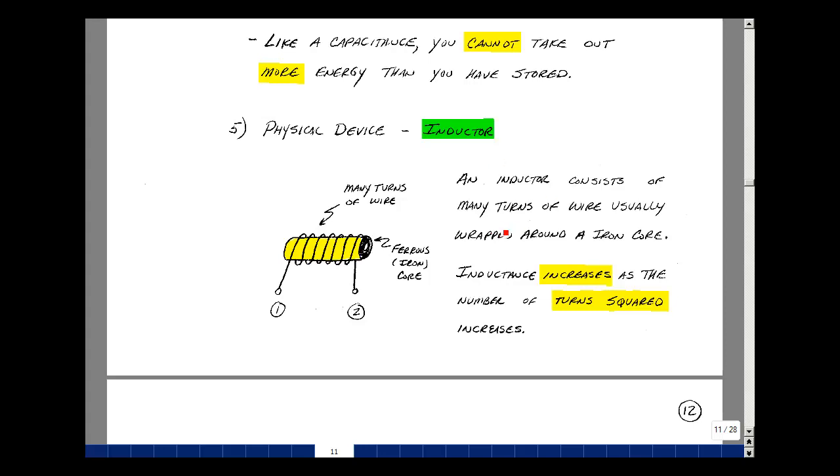An inductor consists of many turns of wire, usually wrapped around an iron core, indicated as in this drawing. The inductance increases as the number of turns increases, but it goes as the square. The more windings you have, the more inductance you have, but it will go as the square of the number of windings.